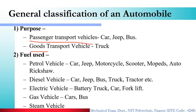Then there are diesel vehicles — cars, jeeps, buses, and trucks. Commercial and heavy transport vehicles are basically diesel vehicles. Today there is a lot of market for electric vehicles — cars, buses, motorcycles, and two-wheelers are available as electric vehicles. Then there are gas vehicles such as CNG and LPG vehicles, which include cars and buses.